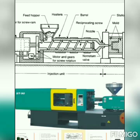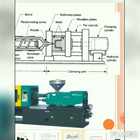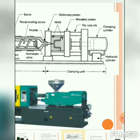The nozzle is used to force the plasticized material into the core and cavity. It is the connection between the injection unit and the clamping unit. The clamping unit holds the core and cavity under pressure. It consists of the mold (core and cavity), stationary plate, movable plate, tie rods, clamping cylinders, and clamping force motor.